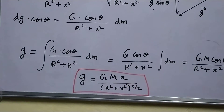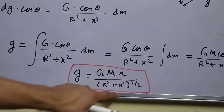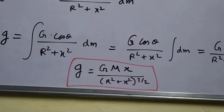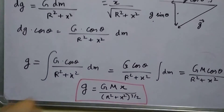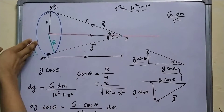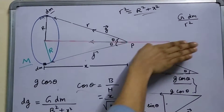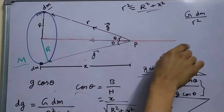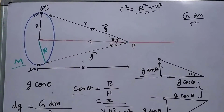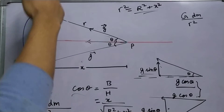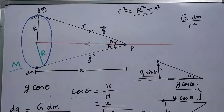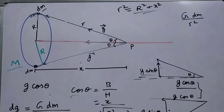This is the magnitude of the gravitational field, and this field points inward. If the positive x direction points away from the ring, the field is in the negative x direction and has no component along the y-axis.